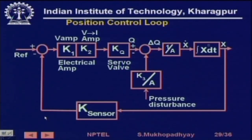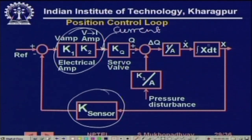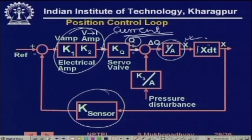This is the block diagram arrangement of that loop. These are the electrical circuit gains, this is the sensor gain, and this is the valve gain — the current-to-flow characteristic k_q of the valve. When you have a certain flow, flow divided by area gives you velocity, and velocity integrated gives you position. The flow can be slightly changed if the supply pressure of the pump changes, so to model that they have put a pressure disturbance block. These are very precision control devices, so it is important to understand the dynamics.